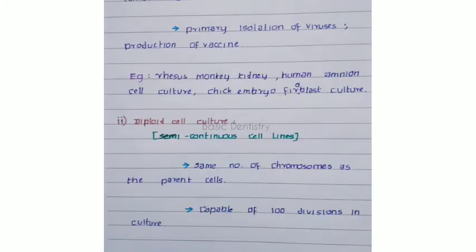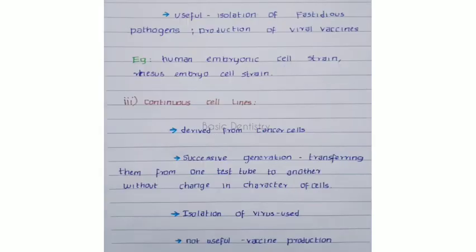The second type is diploid cell culture, also called semi-continuous cell lines. It contains the diploid number of chromosomes, the same as the parent cells. It is capable of about 100 divisions in culture, meaning it undergoes serial culture. It is useful for isolation of fastidious pathogens and production of viral vaccines. An example is human embryonic cell strain.